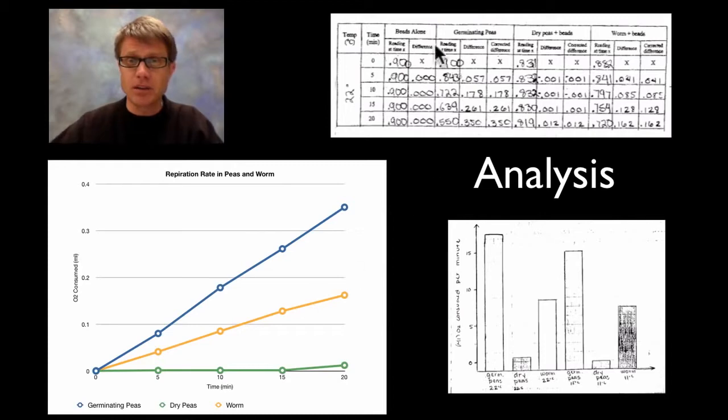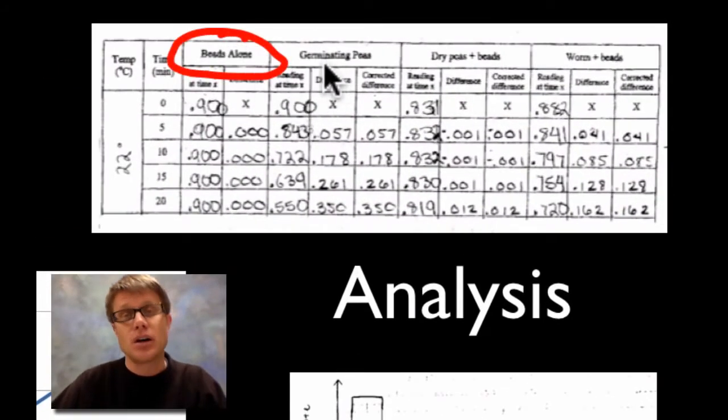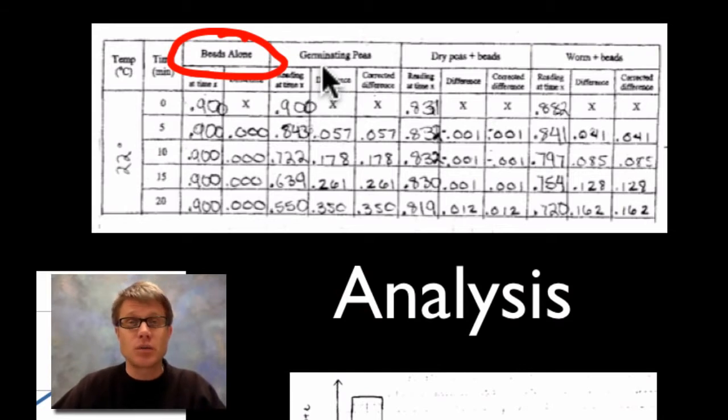What do we find? Well here's some data. Here would be the beads alone. Again we're using that to just accommodate for any changes because temperature fluctuations are going to have a huge influence on this. We now got our germinating peas, dry peas and then worms. And so we can subtract any changes inside the beads from these other ones to account for any changes in temperature.